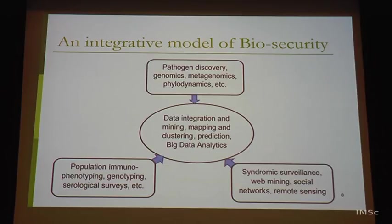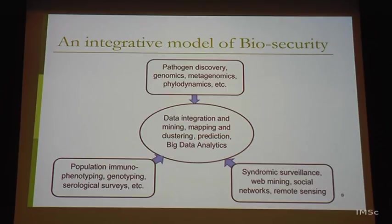This is how we try to approach it — an integrative model. For pathogen discovery there is pathogenomics, metagenomics, and phylodynamics. You also need dynamic study of how mutations happen and how viruses change over time, especially RNA viruses which change much more rapidly. Then there is the population aspect, surveillance, syndromic surveillance, web mining, social networks, and remote sensing — a growing space.